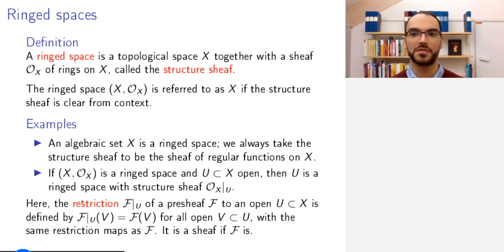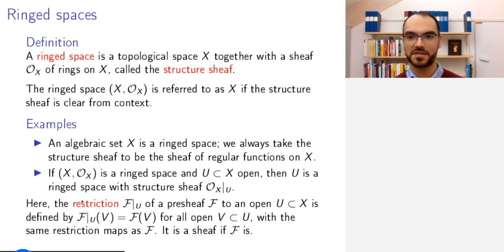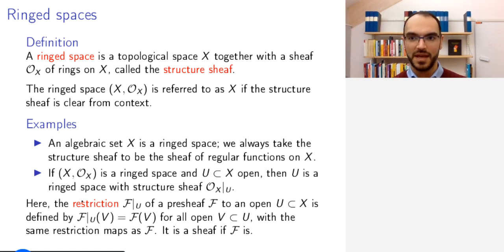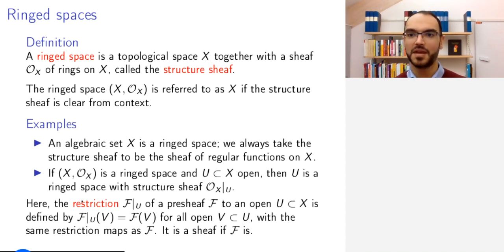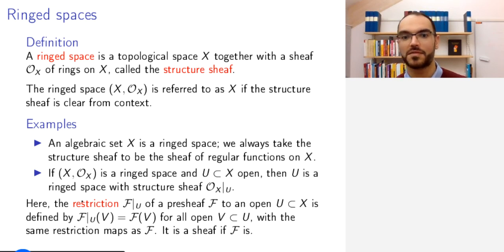This is a very natural thing. The restriction homomorphisms are the same as you had for the big pre-sheaf. And one can show that if the pre-sheaf F is a sheaf — so if it satisfies the gluing property — then a fortiori it will satisfy the gluing property for subsets of U, so the restriction is a sheaf in that case.